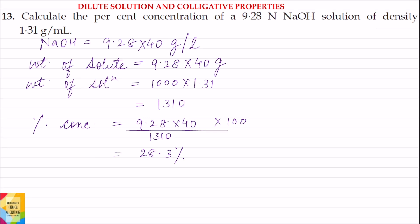Question 13. Calculate the percent concentration of a 9.28N NaOH solution of density 1.31 gram per milliliter. Normality of NaOH given hai 9.28N. Now what is the meaning of 9.28N? 9.28N can also be written as 9.28 equivalents of NaOH per liter of solution.